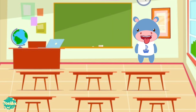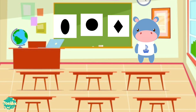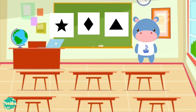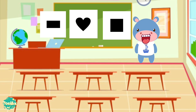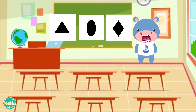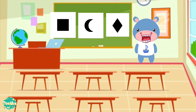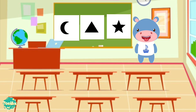Now let's play a game. Which one is the shape? Square, Square, Circle, Triangle, Rectangle. Oval, Diamond, Heart, Crescent, Star.